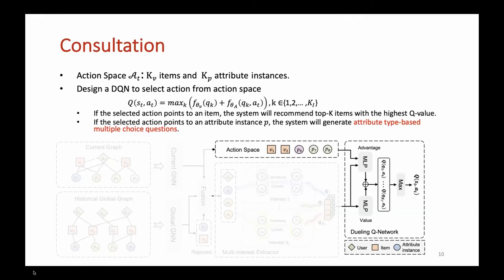If the selected action points to an item, the system will recommend top K items with the highest Q value. If the selected action points to an attribute instance, the system will generate attribute type based multiple choice questions to ask a user. Specifically, the system decides attribute type C of selected action and selects top K attribute instances whose corresponding attribute type is C with the highest Q value.